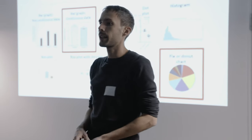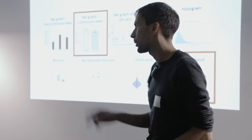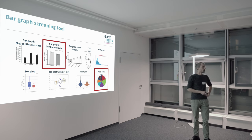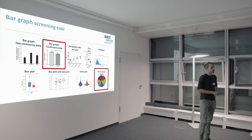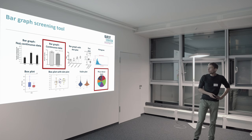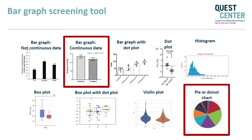I'm actually going to present two tools to you today. The first one is our bar graph screening tool — a tool that looks at publications and finds different visualization categories, basically everything you see on the slide.